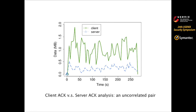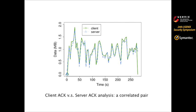Here is an example of an uncorrelated pair in the ACK-versus-ACK analysis from the hijack experiment. The X-axis is time and the Y-axis is the traffic flow. The green line is the client and the blue line is the server — you can tell they are not correlated. And on the contrary, this is an example of a correlated pair.